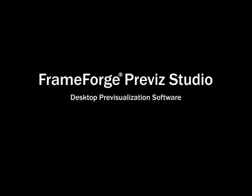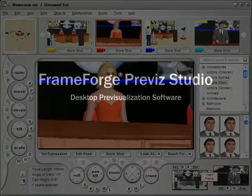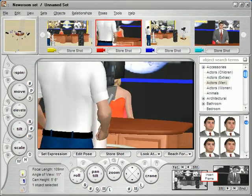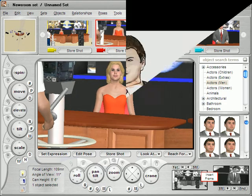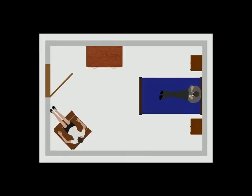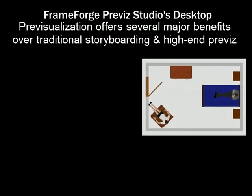FrameForge 3D Studio is desktop pre-visualization software designed to put the power of pre-vis right into the hands of directors. While traditional storyboards can convey tone and suggest framing, their fatal flaw is that while anything can be drawn, due to the realities of camera, sets, and optics, not everything can be shot. For this and other reasons, FrameForge 3D Studio's desktop pre-visualization offers several major benefits over traditional storyboarding and high-end pre-vis.